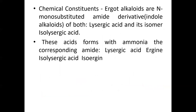The ergot sclerotium is dark violet to black in color, very small, with one end curved and the other elongated. It has a disagreeable odor, unpleasant taste, and the sclerotium size is one to three centimeters in length. The shape is fusiform or triangular, tapering on both ends, and it is brittle with a short fracture.